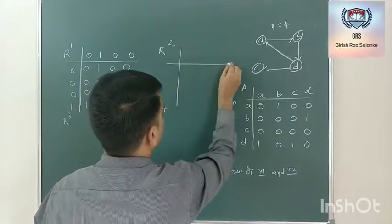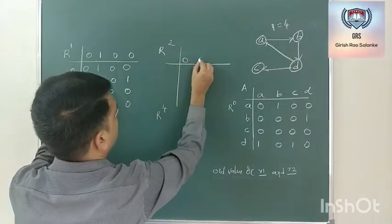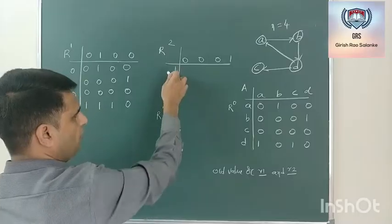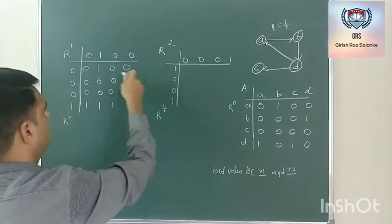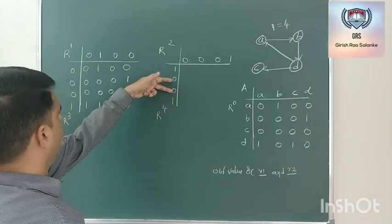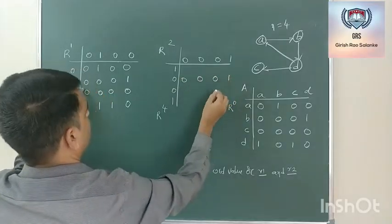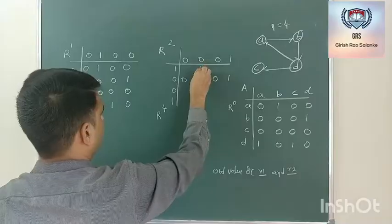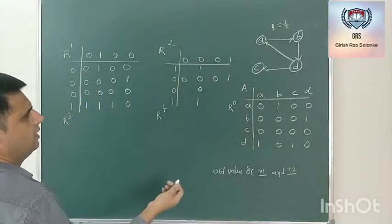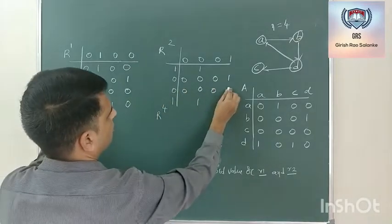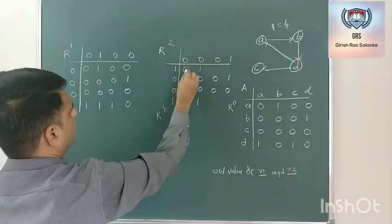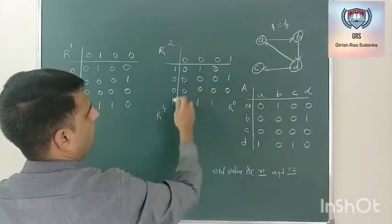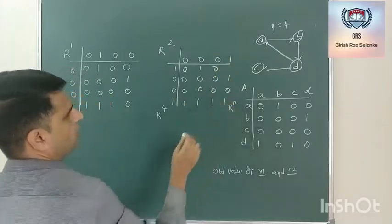Now go to the second iteration. In the second iteration, the reference is second row and second column. Second row is 0, 0, 0, 1, and second column is 1, 0, 0, 1. Rows with reference value 0 — directly take the value of the previous iteration. Only where reference values are 1 do we calculate. One value gets updated: 1 AND 1 = 1, then 1 AND 1 OR 0 = 1.